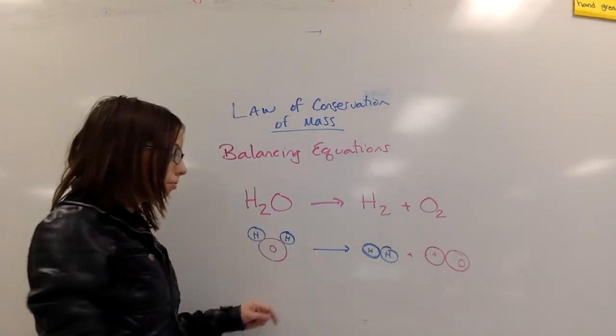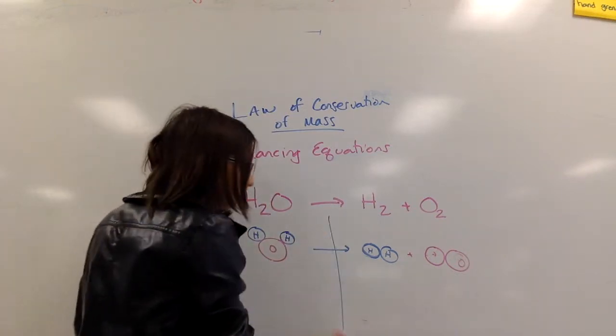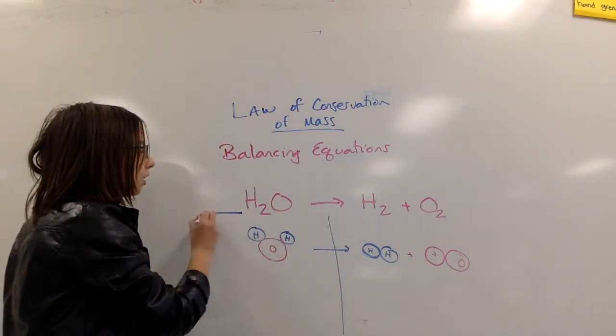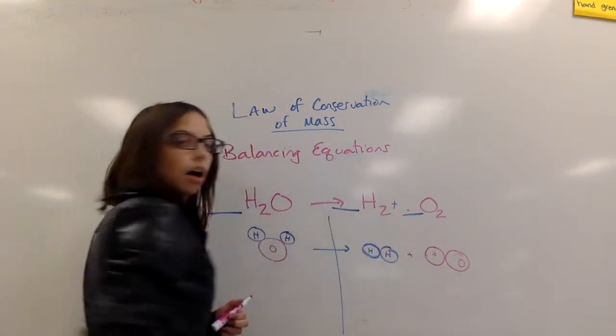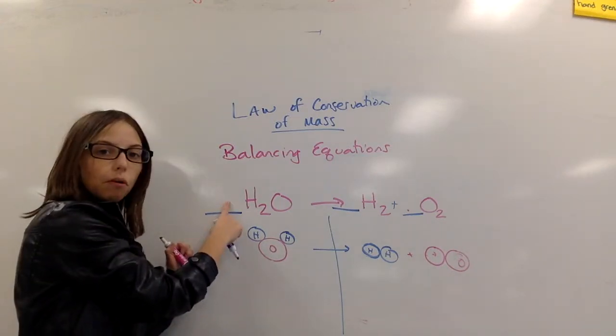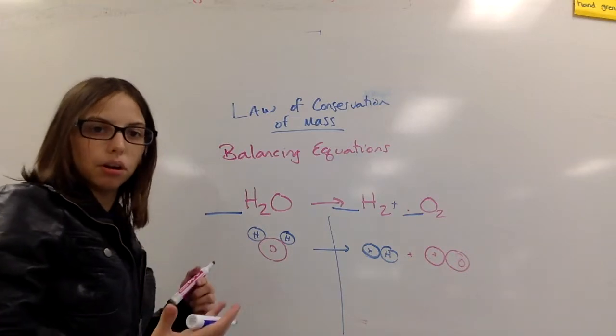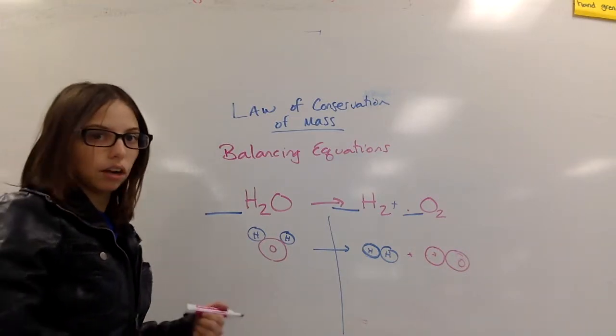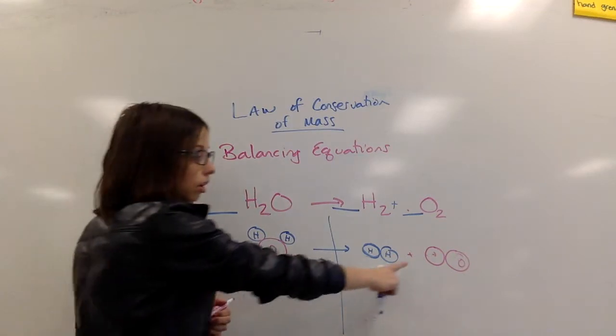So what I will do is I will go back and I will start to balance. The only way I can balance is by changing the coefficients, the numbers that I put into the reaction. And the coefficients are the numbers that go before the compound or the element, and that basically tells you the number of pieces you have of that compound or element. So I need another water over here.